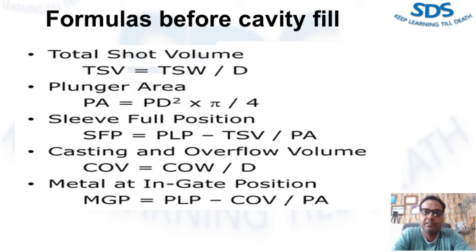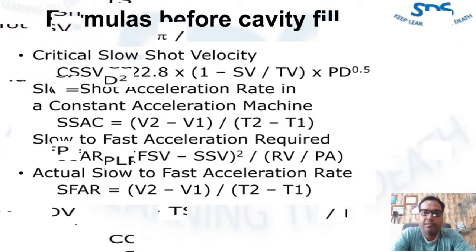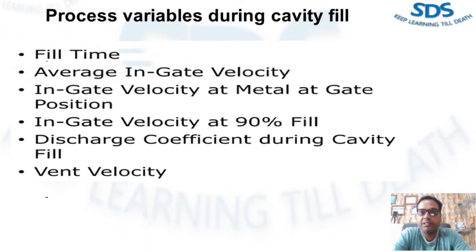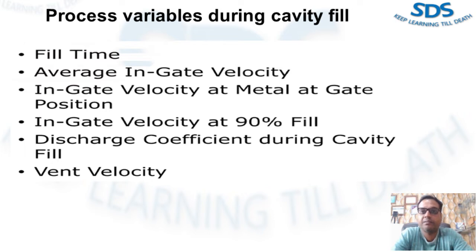Now we will discuss process variables during cavity fill. The cavity fill event is equally critical to all die casting processes. The high pressure die casting process is characterized by a fast fill time with high in-gate velocity. The purpose of high fill rate and high in-gate velocity is to provide a net shape product with thin walls, high internal integrity, and good surface finish.